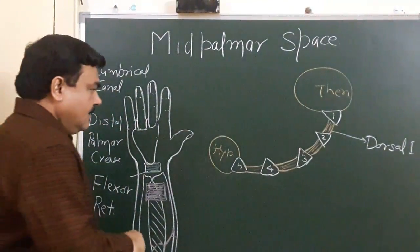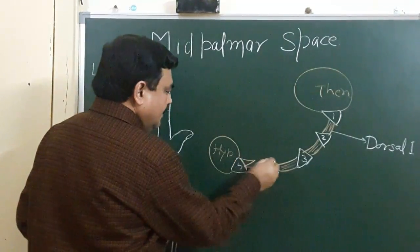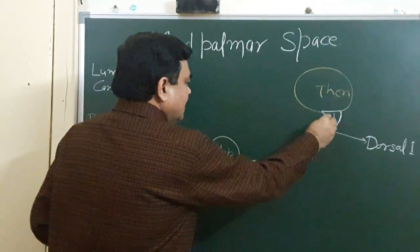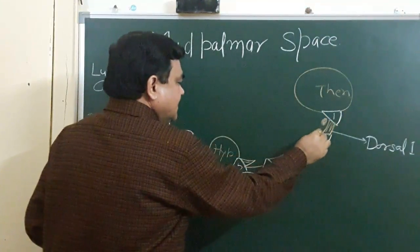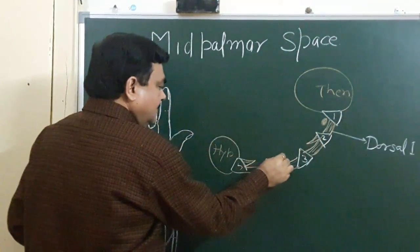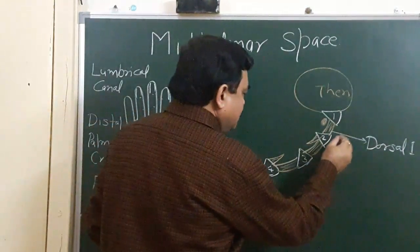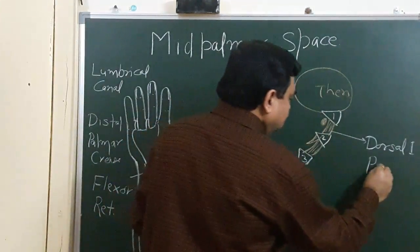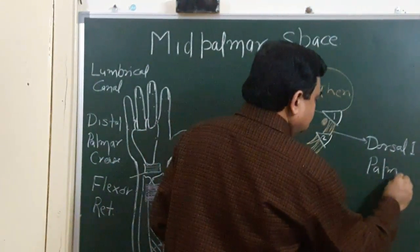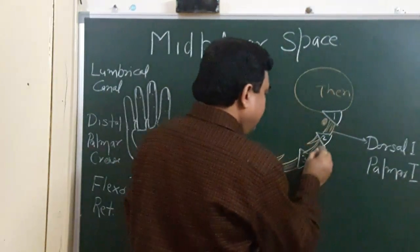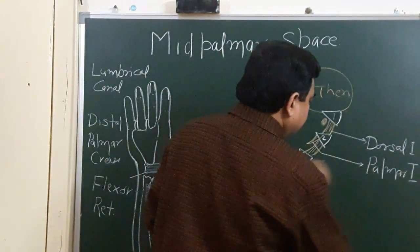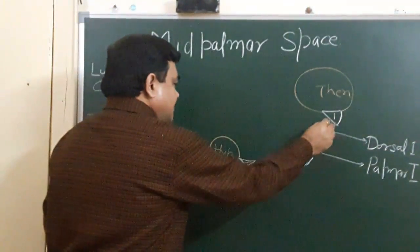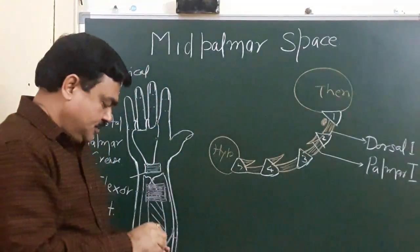Here are the palmar interossei. This is the first, second, third, and fourth palmar interosseous.